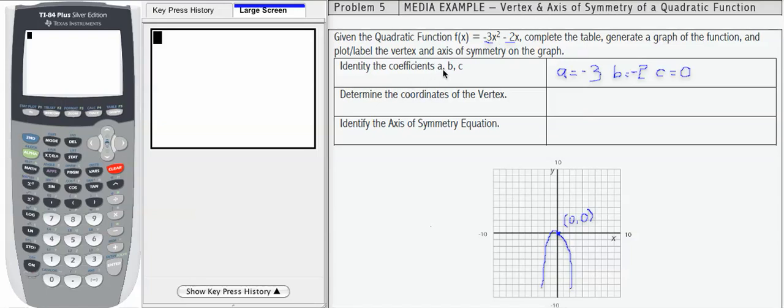So the coefficients are the same as what we had before: negative 3 for a, negative 2 for b, and 0 for c. I'm going to leave my graph that I had before because we're going to add to it with this additional information.